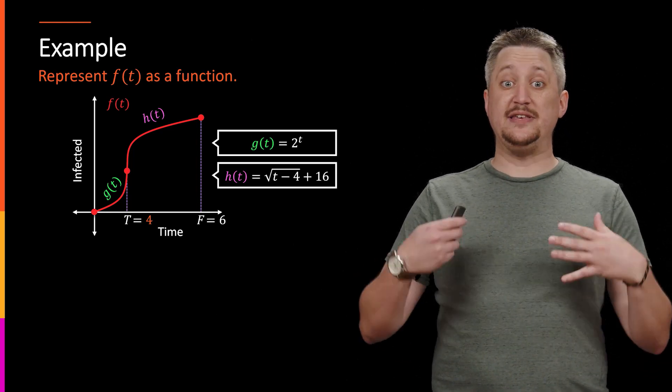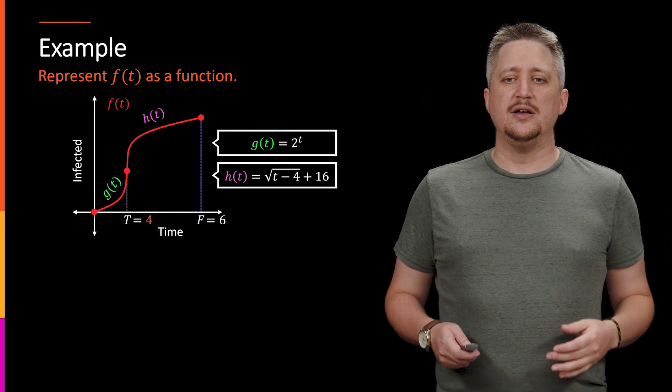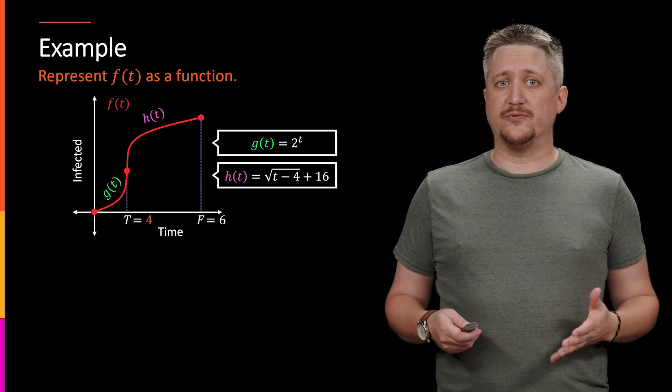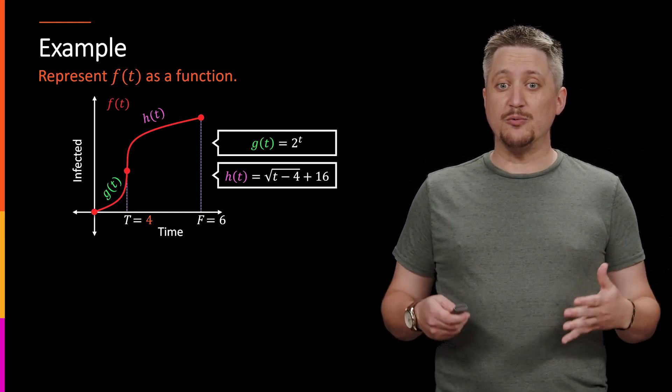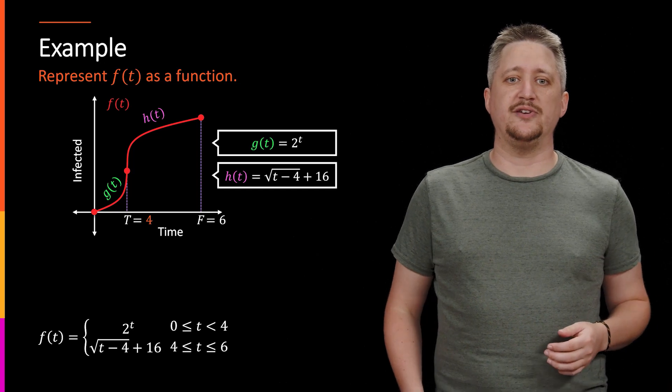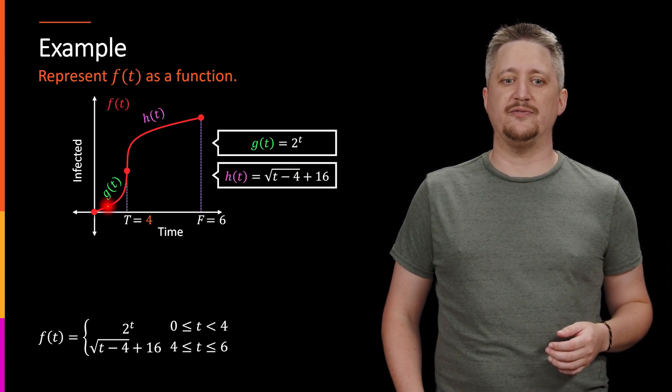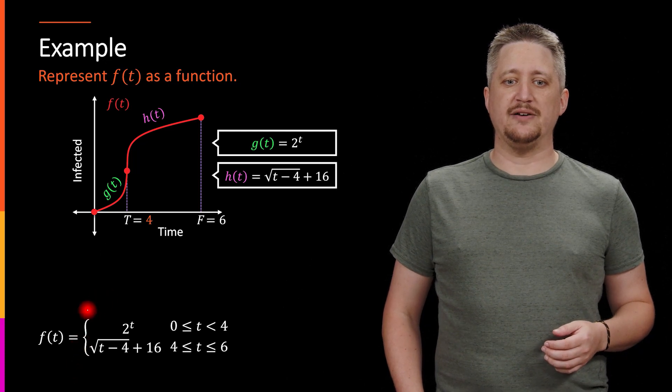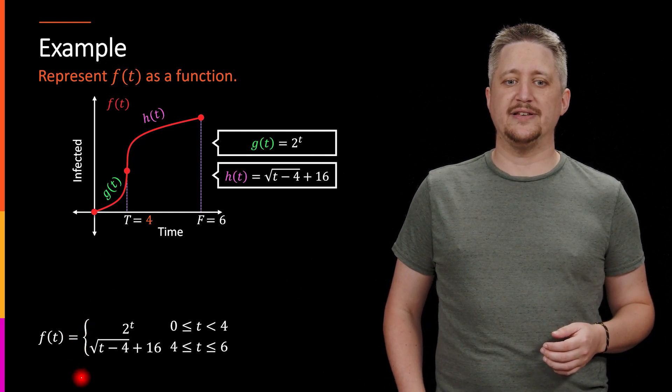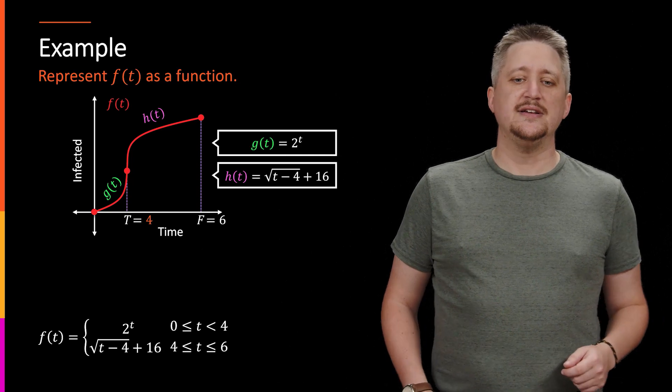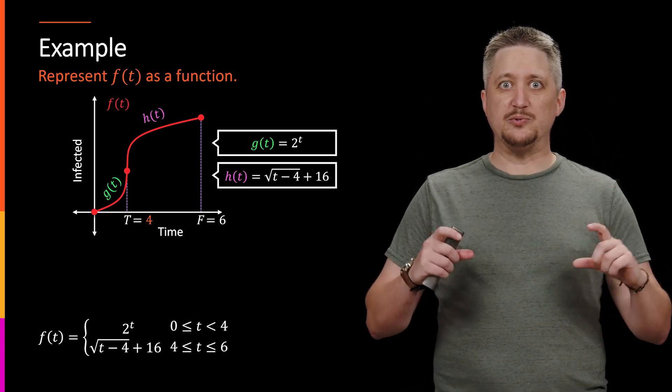How will we record this as a piecewise function? Well to do that, we use this particular format and the result would look something like this. So we would say, okay, the overall F of T, the actual function F of T equals, and then we have this brace thing here, that nice little squiggly brace. And then we have this sort of grid of information.